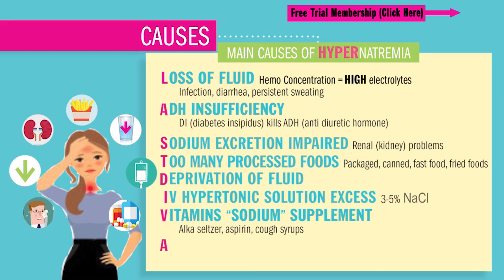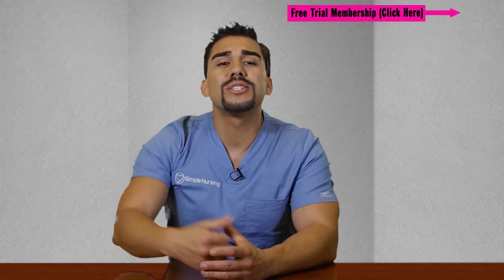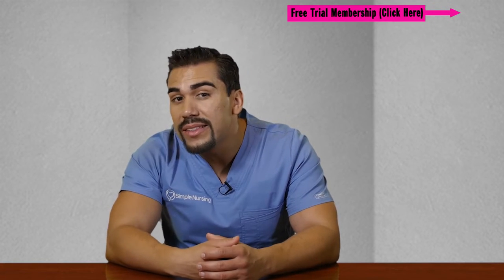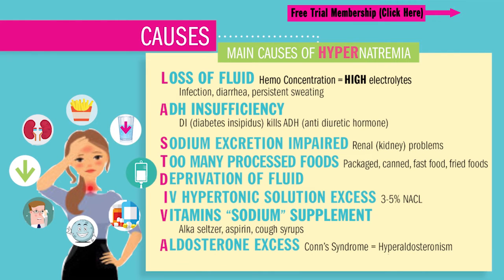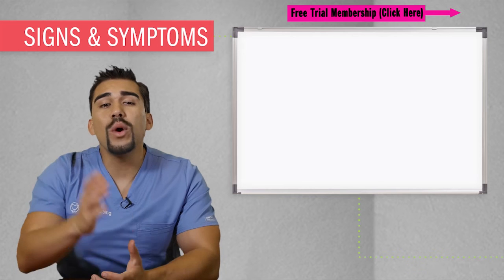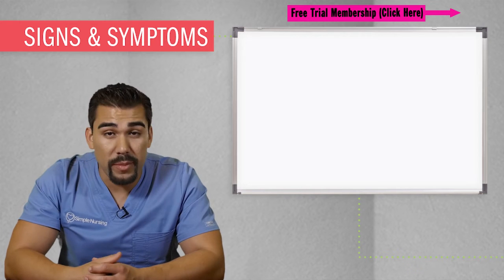A is for aldosterone excess, like Cushing's disease, which leads to hyperaldosteronism. Aldosterone is the security guard bouncer in the kidneys, which holds sodium inside the body by blocking her at the kidney doors. So our patients are going to retain all this water and they'll look big and round, like big moon faces with Cushing's disease.